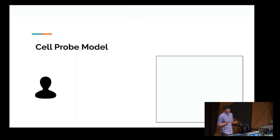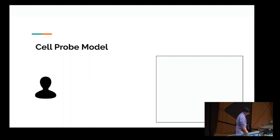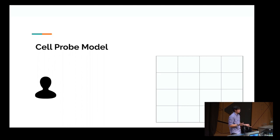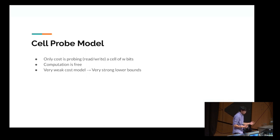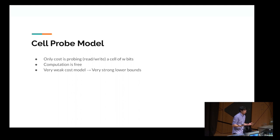Let's get into how we prove these bounds. The model we use is a cell probe model — it's appeared very frequently in the data structure world but only recently in the oblivious data structure world. We have a server consisting of cells of W bits. The only cost in the cell probe model is the client accessing a single cell — either a read or a write to a cell of W bits. Computation is completely free. Because of this very weak cost model, we get a very strong lower bound.